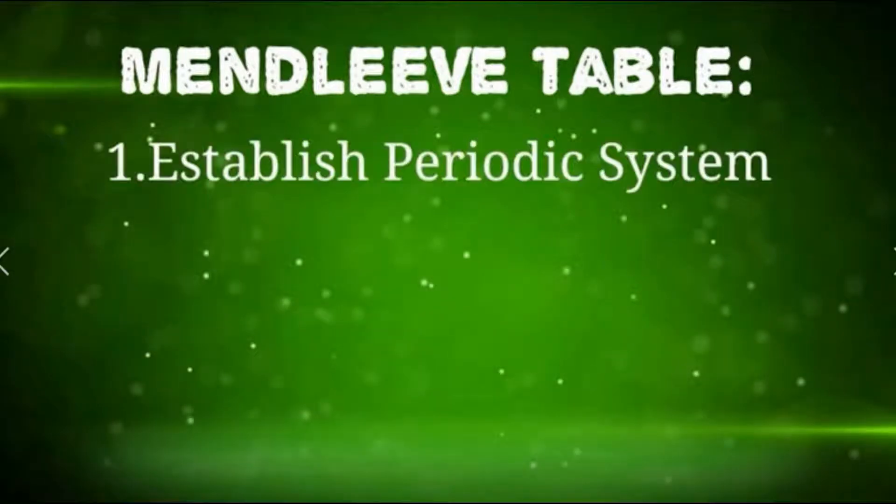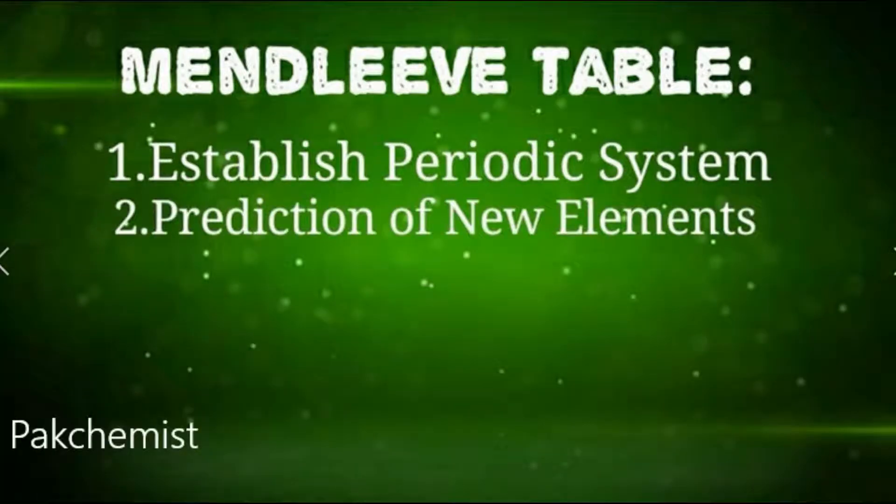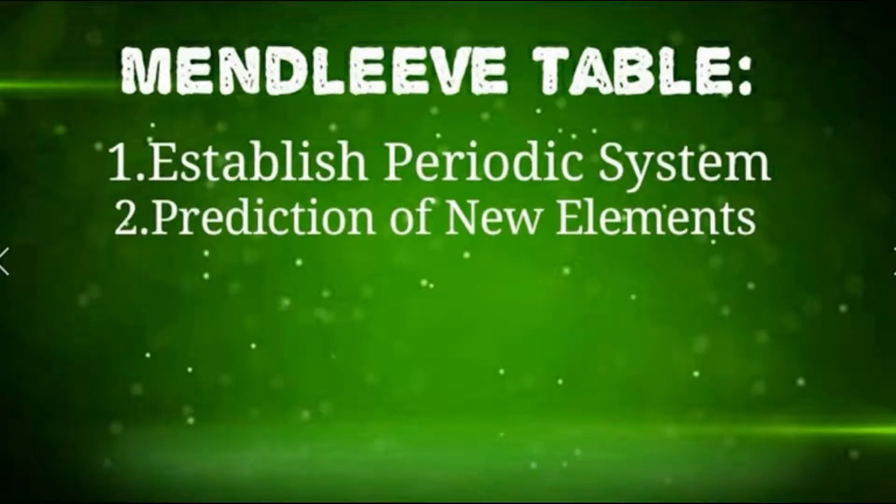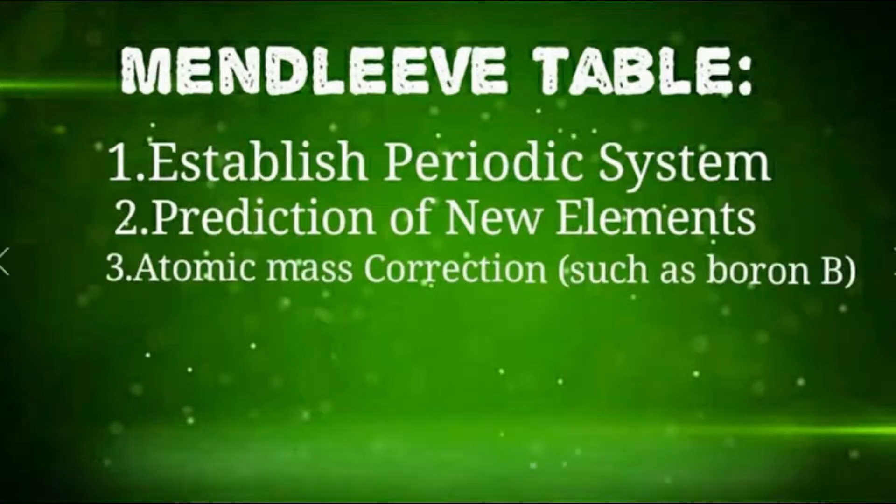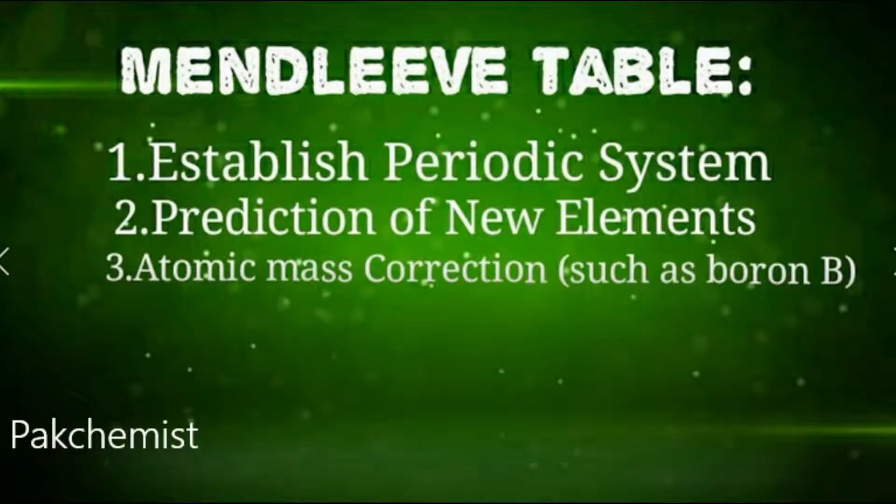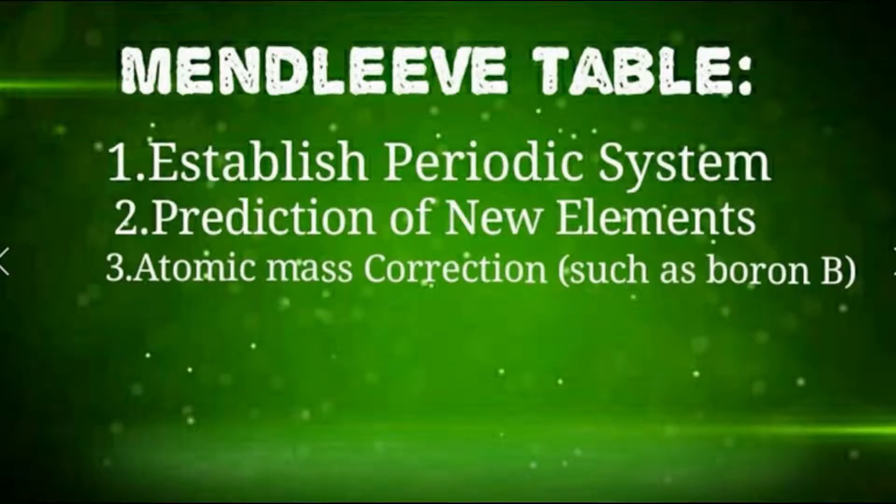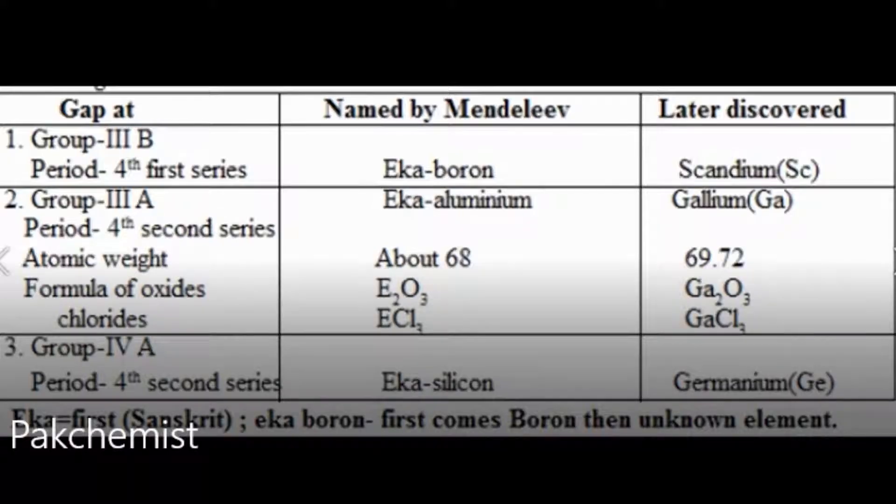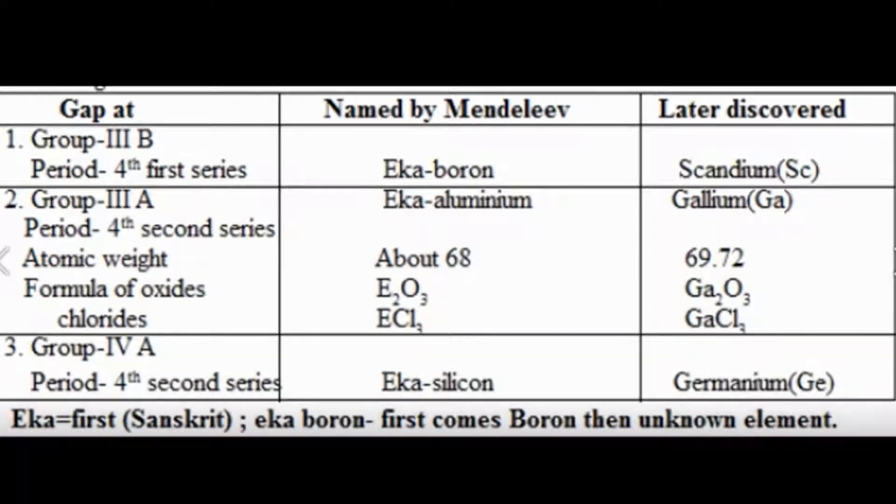Mendeleev table - Mendeleev को periodic system बनाने का credit दिया गया. वो इतने intelligent थे कि उन्होंने new upcoming elements की prediction पहले से ही की हुई थी जो later discovered भी हुए. इन्होंने atomic mass की correction भी की like boron. Like कुछ यहां पर table में given है जो Mendeleev ने सिर्फ names दिए थे - Eka Boron to Scandium, Eka Aluminium to Gallium.